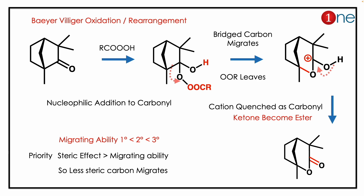You have a cation near the alcohol — the cation is quenched as a carbonyl. So you start with a ketone and end up with an ester — it's a cyclic ester, a lactone. The reason for migration of the rigid carbon is the steric effect: steric effect dominates, so the less sterically hindered carbon migrates.